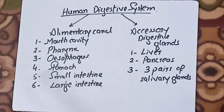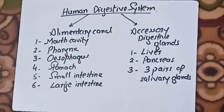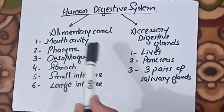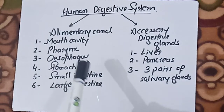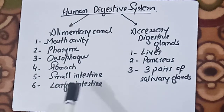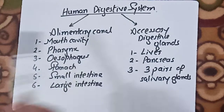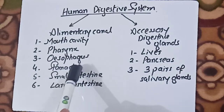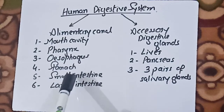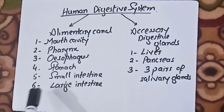The alimentary canal is the tubular structure which leads from the mouth cavity till the large intestine. This alimentary canal is further composed of six components, or six organs: the mouth cavity, the pharynx, the oesophagus, the stomach, the small intestine, and the large intestine.